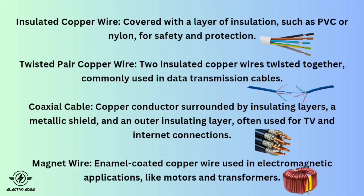Insulated copper wire is covered with a layer of insulation such as PVC or nylon for safety and protection. Twisted pair copper wire consists of two insulated copper wires twisted together, commonly used in data transmission cables. Coaxial cable has a copper conductor surrounded by insulating layers, a metallic shield, and an outer insulating layer, often used for TV and internet connections. Magnet wire is enamel-coated copper wire used in electromagnetic applications like motors and transformers.